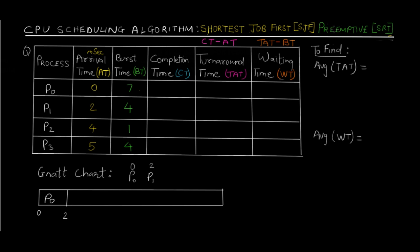Since this is a preemptive algorithm, the processor checks the remaining time. When 2 seconds have passed, P0 still needs 5 more milliseconds to complete. But we now have P1 which arrived at time 2 with a burst time of 4. Since 4 is less than 5, the CPU will preempt P0 and start processing P1 — because at time 2, P0 requires 5ms but P1 requires only 4ms. The CPU stops P0 and moves to P1.